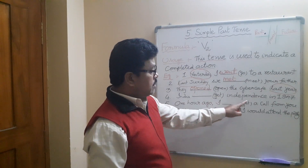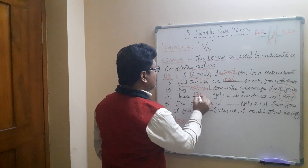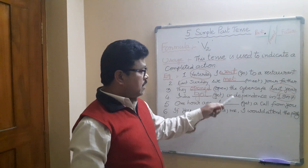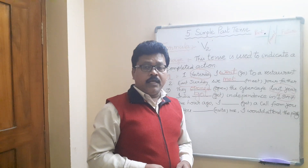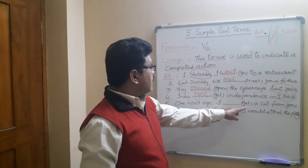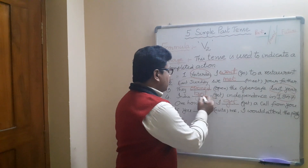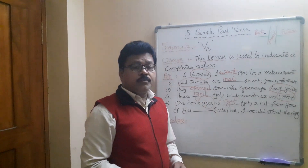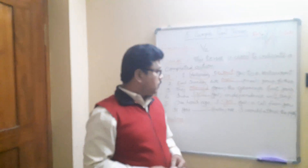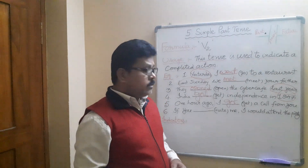'India ___ (get) independence in 1947.' A past year is given, so get becomes got — V2 is got. India got independence in 1947. India won the world cup in 1983; India won the world cup in 2011. 'One hour ago I ___ (get) a call from you.' — Ago is the indication. I got a call from you. Two days ago I gave you some money; two days ago I told you something.